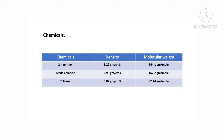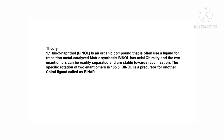Toluene, having density 0.87 g/cm³ and molecular weight 92.14 g/mol. The next point is theory: 1,1'-bi-2-naphthol (BINOL) is an organic compound that is often used as a ligand for transition metal-catalyzed asymmetric synthesis.